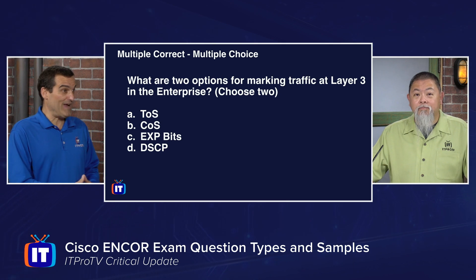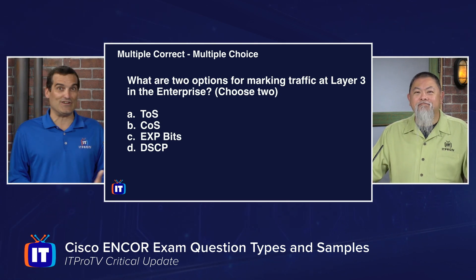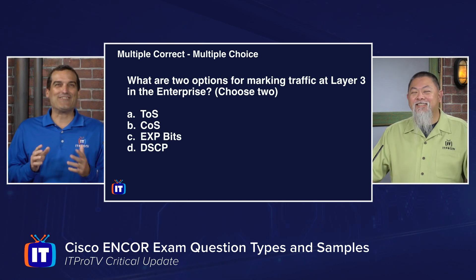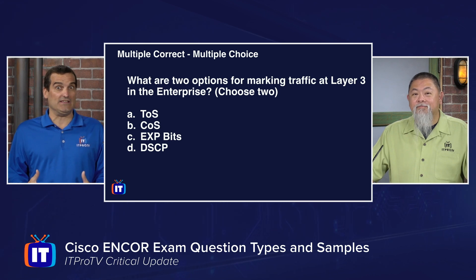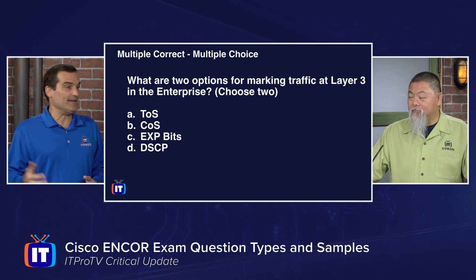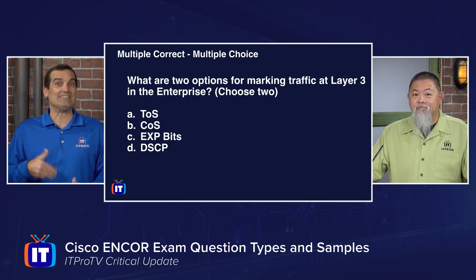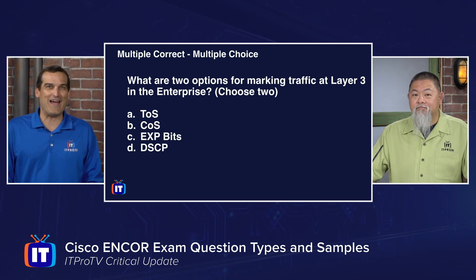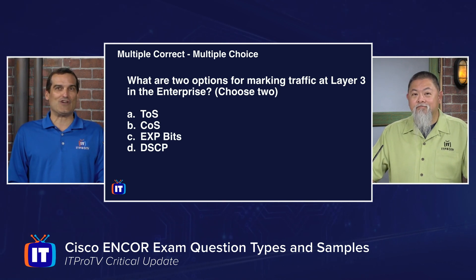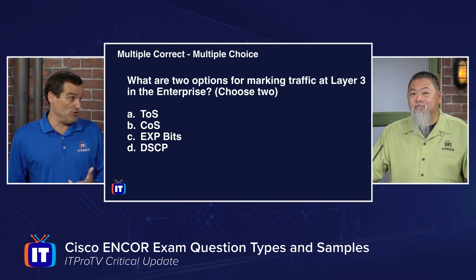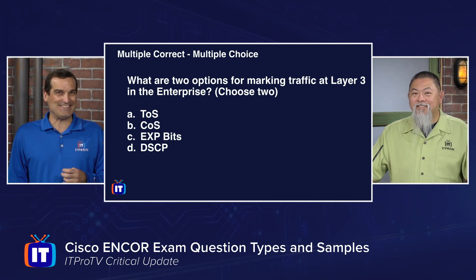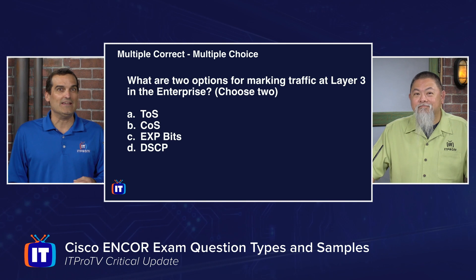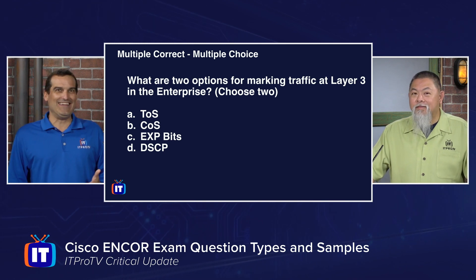Next up we have the multiple correct multiple choice. Some good news for test takers: Cisco does not do the trickiest version of these, where they say 'choose all that are correct.' You will be told how many are correct. On this question: what are two options for marking traffic at layer three in the enterprise? The answer choices are TOS, COS, EXP bits, and DSCP — two would be correct.